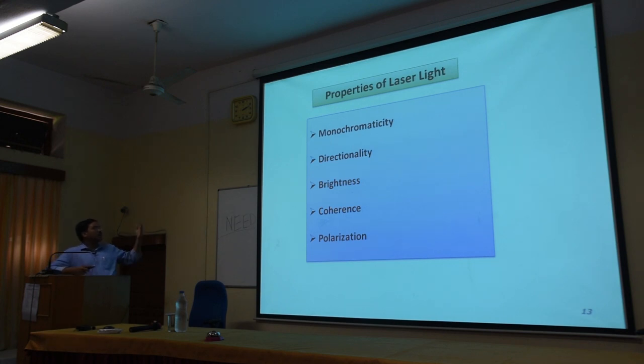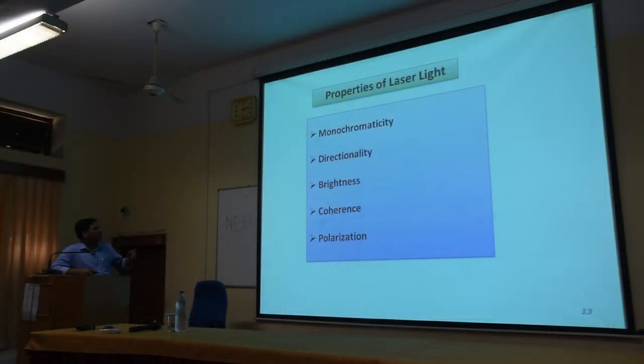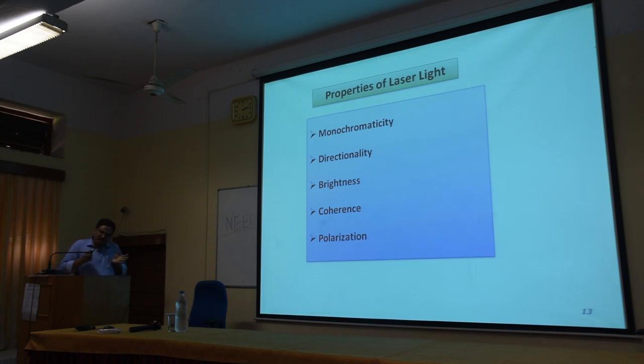Compared to conventional light, laser light has several special properties. Monochromaticity is very high — laser light is highly monochromatic. Directionality is high, meaning low divergence. Laser light is more directional and less divergent than normal light. Brightness is very high compared to normal light. Coherency means photons are generated in the same phase. Polarization is also a very important property of laser light.